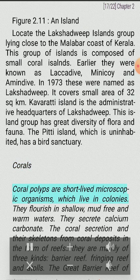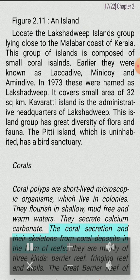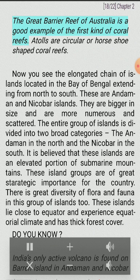Coral polyps are short-lived microscopic organisms which live in colonies. They flourish in shallow, mud-free and warm waters and secrete calcium carbonate. The coral secretions and their skeletons form coral deposits in the form of reefs. They are mainly of three kinds: Barrier Reef, Fringing Reef and Atolls. The Great Barrier Reef of Australia is a good example of the first kind of coral reef. Atolls are circular or horse-shoe-shaped coral reefs.